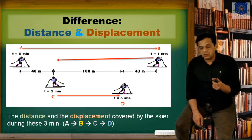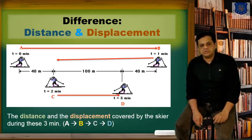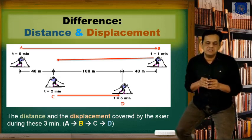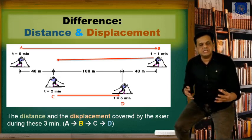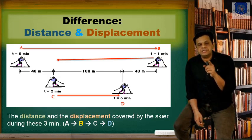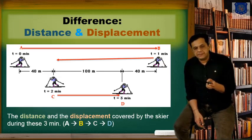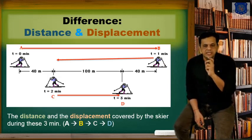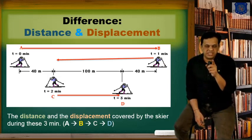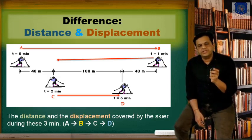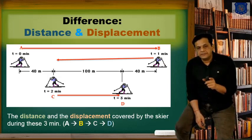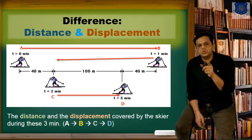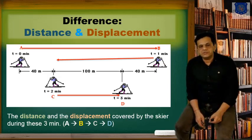Now what is displacement actually? The difference between displacement and distance: distance is the path we travel through, measured in meters, centimeters, or kilometers. Displacement is straight from the starting point to the end point. Starting point here is A and end point is D, so displacement is 40 plus 100, that is 140 meters. So distance covered in 3 minutes is 420 meters and displacement is 140 meters.